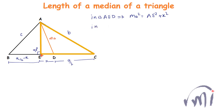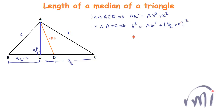In triangle AEC, AC is the hypotenuse whose length is equal to b, so b² equals AE² plus EC². EC is equal to a/2 plus x, so b² can be written as AE² plus x² plus a²/4 plus ax.